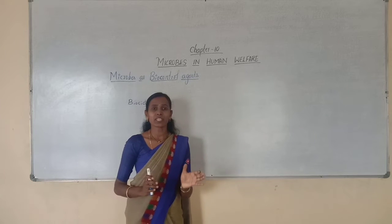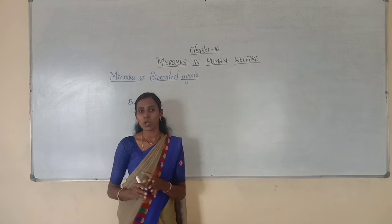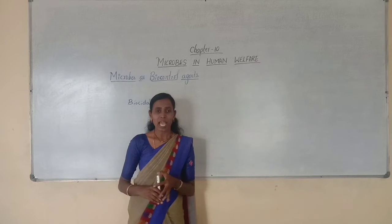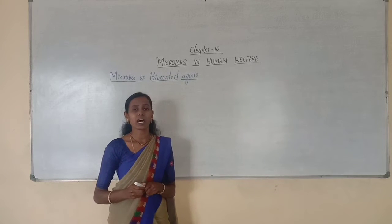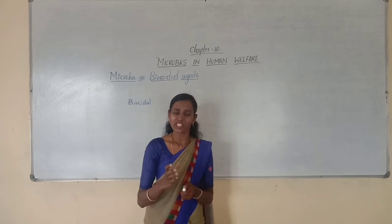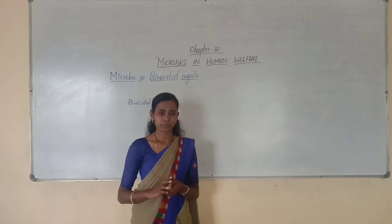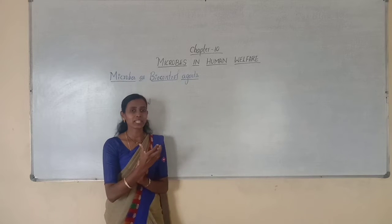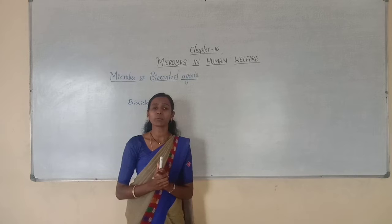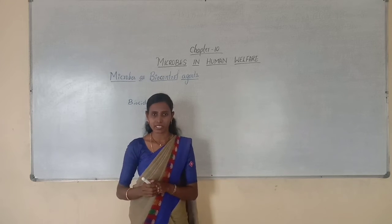These chemicals are highly toxic and harmful to human beings as well as other animals. Most of these chemicals cause diseases in human beings like dermatitis, allergic reactions, and many of them are carcinogenic in nature. These chemicals can enter into the food chain and cause diseases at various trophic levels.